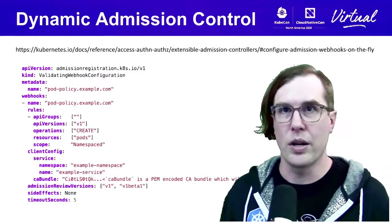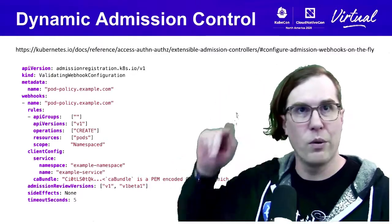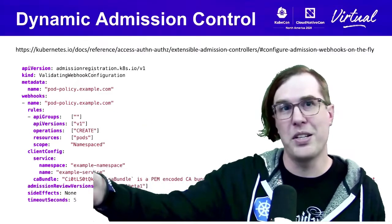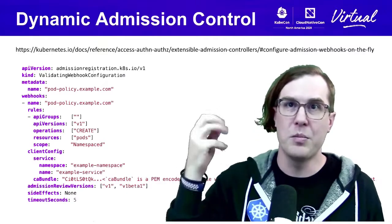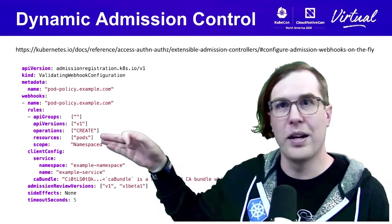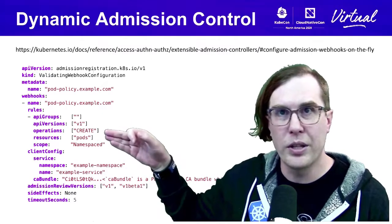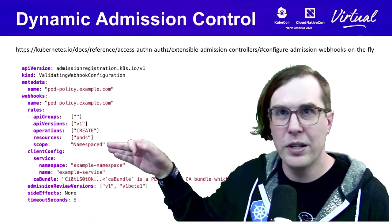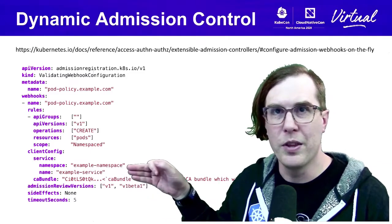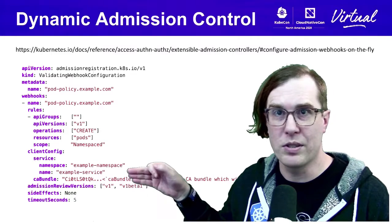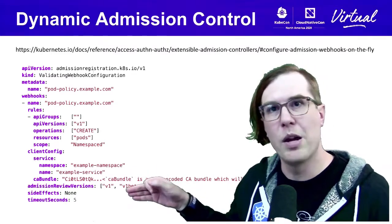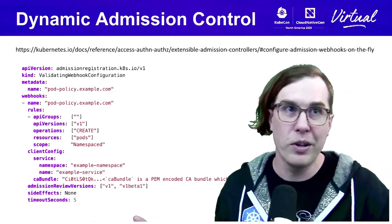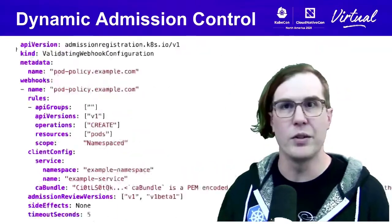Here's a screenshot from the docs showing how to register a validating webhook for custom dynamic admission control. In this case, we're watching create operations on pods with API version V1 and some namespace scope. The DNS name of this service is example-service. There's also a timeout field — on distributed systems you can't wait forever for the webhook to respond, so it's good to have timeout values configured.